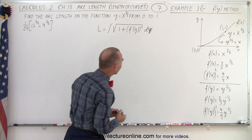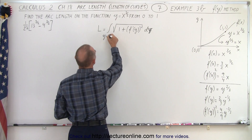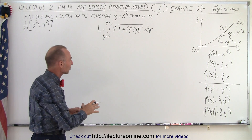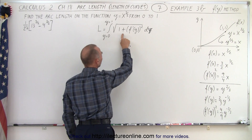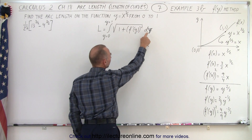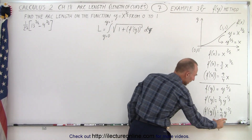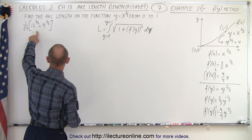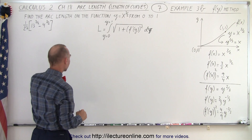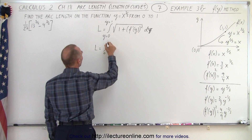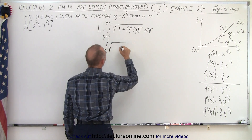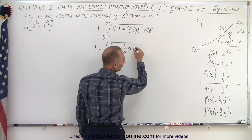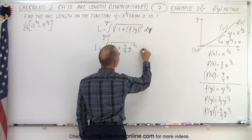We're going to write this from y equals 0 to y equals 1, so that way it's specific that we use y limits instead of x limits in this integral. It's the integral of the square root of 1 plus the derivative of the function squared times dy. In this case the derivative of the function is 2 thirds y to the minus 1 third. So the arc length is equal to the integral from 0 to 1 — these are y limits — times the square root of 1 plus 4 ninths y to the minus 2 thirds power, dy.